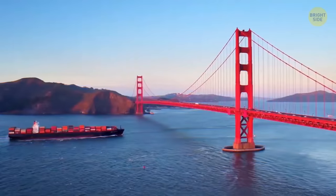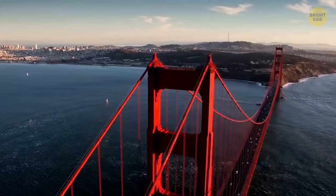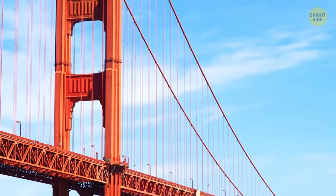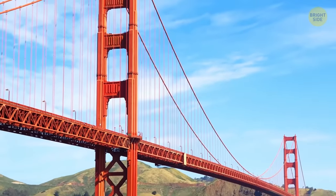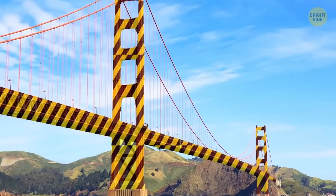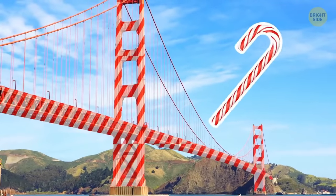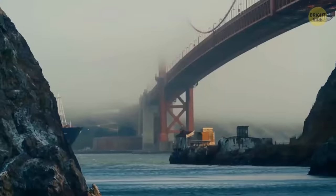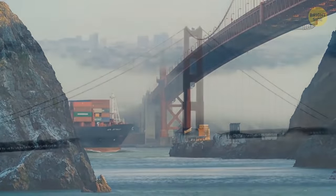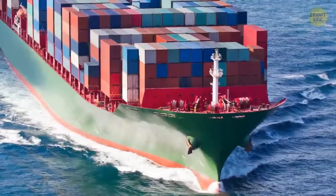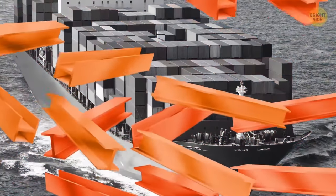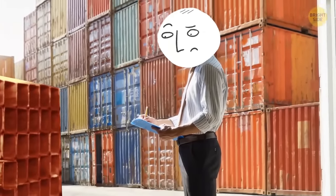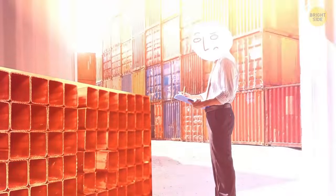The Golden Gate Bridge color wasn't meant to be the orangey-red that it is today. The bridge's original color was suggested to be many other colors, such as black with yellow stripes or even candy cane to make it visible for passing ships and aircraft, especially in the frequent San Francisco fog. But when the steel arrived covered in an orange primer to protect it from rust, the architect preferred the international orange color, and it stuck.